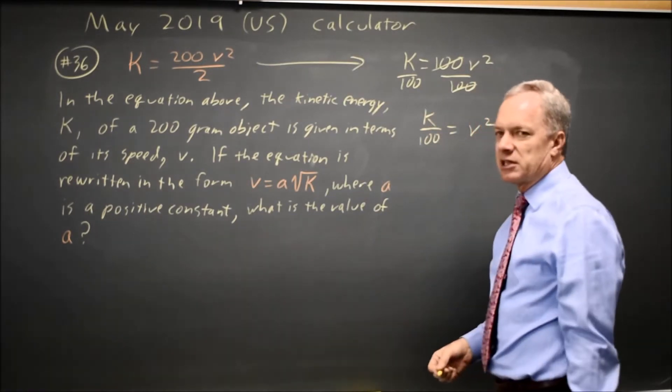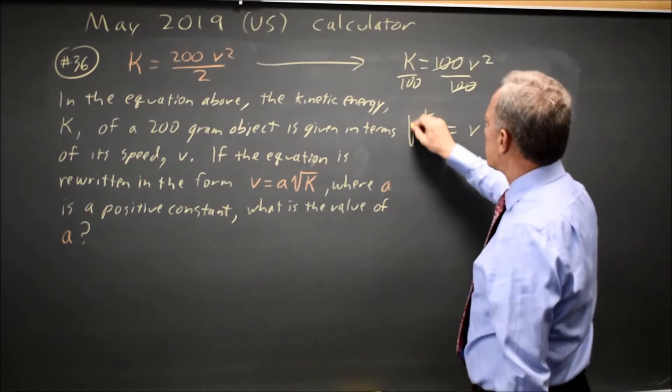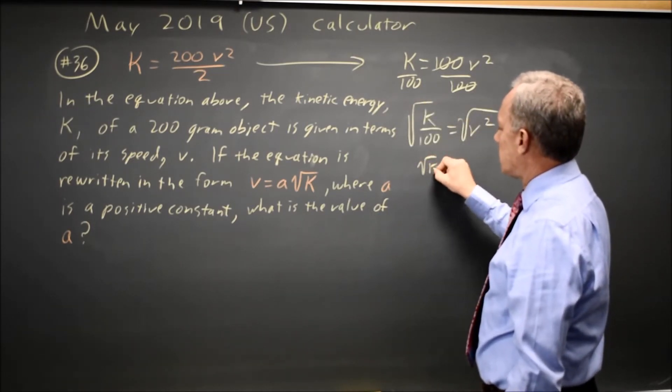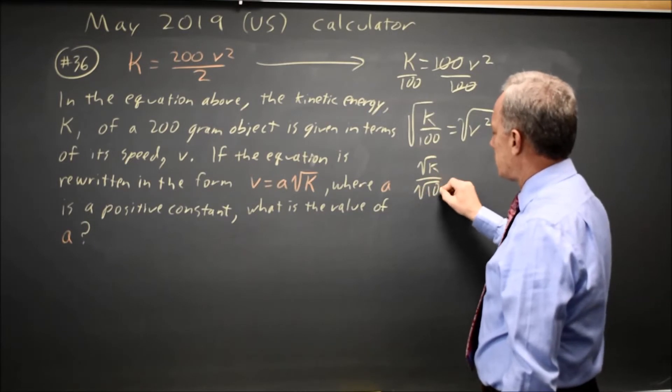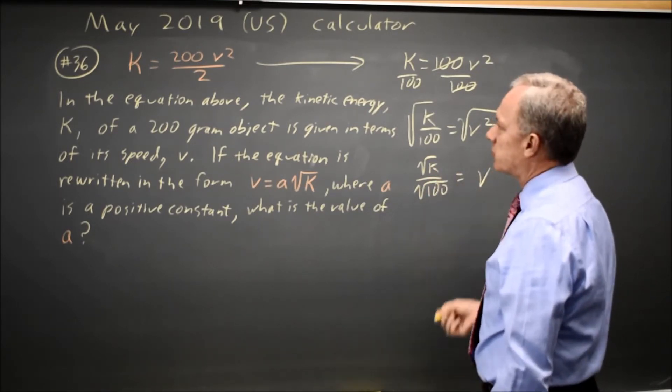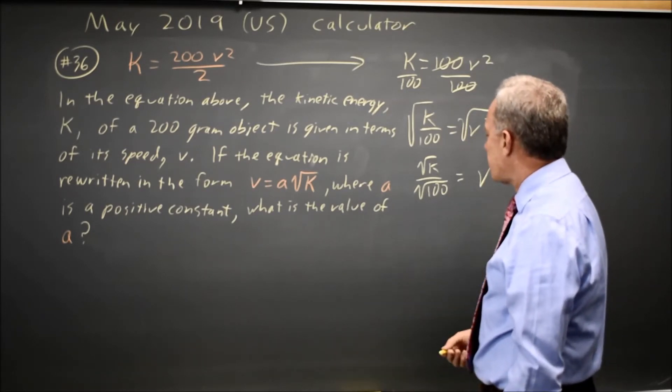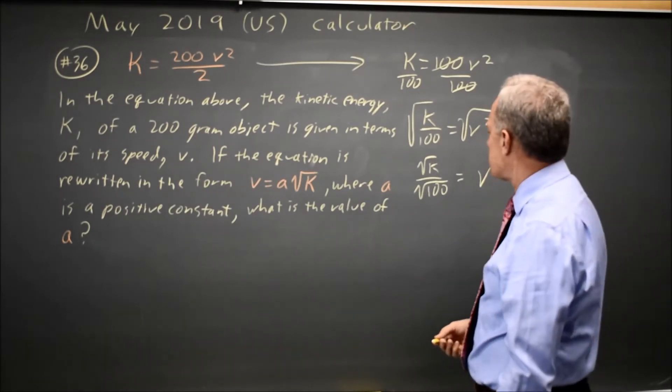And to get V by itself completely, I'm going to square root both sides. So this is square root of K over square root of 100 equals square root of V squared, which I'm going to write as V because kinetic energy can't be negative. So I don't have to worry about the plus or minus.